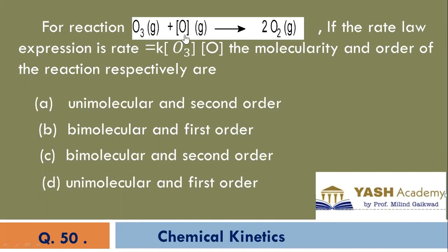For a reaction, O3 gas plus O, nascent oxygen, gives twice of O2 gas. If the rate law expression is rate equals K into concentration of O3 into concentration of oxygen, the molecularity and order of the reaction respectively are. This is the bimolecular reaction, and concentration powers are 1, 1, so it's second order. It's bimolecular and second order, C is the correct option.